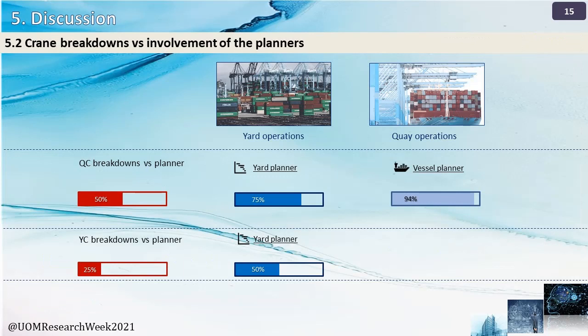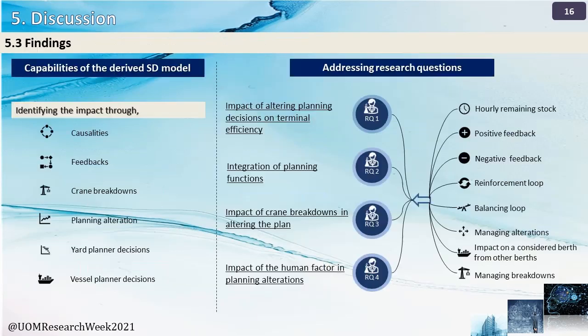We increased the crane breakdowns and simulated the model. It shows that when QCs are counted as half of the initial value, it influences planners and increases their workload. 94% of the vessel moves are altered by the vessel planner while the yard planner had to alter the plan by 75%. According to the key assumptions, only the yard planner is working on yard crane breakdowns. When 26% of the yard cranes face breakdowns, the yard planner has to alter the plan by 50%. Our model is capable of identifying the impact of these factors such as causalities and feedbacks, and we identified that terminal efficiency is affected by reinforcement and balancing loops in the process.